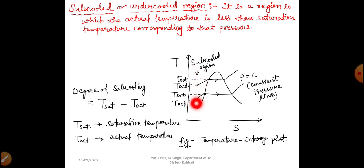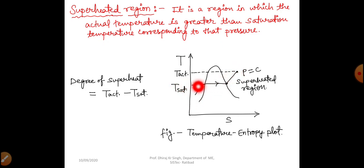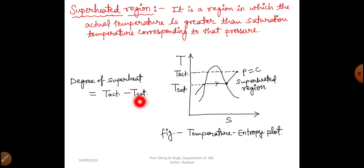The subcooled region is a complete liquid region. Now we will move to the superheated region, which is a complete vapor region. It is a region in which the actual temperature is greater than the saturation temperature corresponding to that pressure. So the degree of superheat is equal to T actual minus T saturation, since T actual will be more and T saturation will be less in the superheated region.